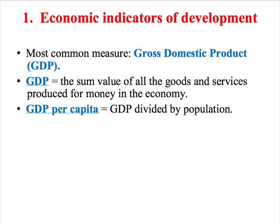Economic development focuses on people's financial well-being — the wealth of the nation and people's living standards. The most commonly used economic indicator of development is gross domestic product, often abbreviated as GDP. Gross domestic product measures the total economic output of a particular country — it is the sum value of all goods and services produced for money in a particular economy.